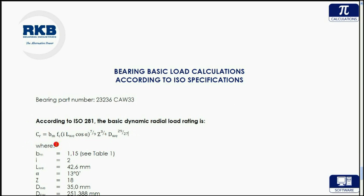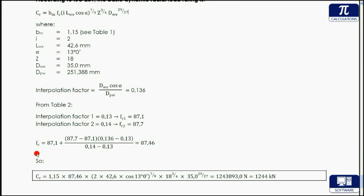The factor BM, in this case 1.15, represents the rating factor for contemporary, commonly used, high quality hardened bearing steel in accordance with good manufacturing practices, the value of which varies with the bearing type and design.